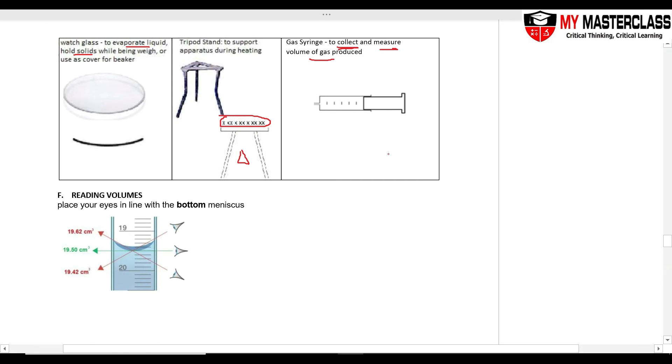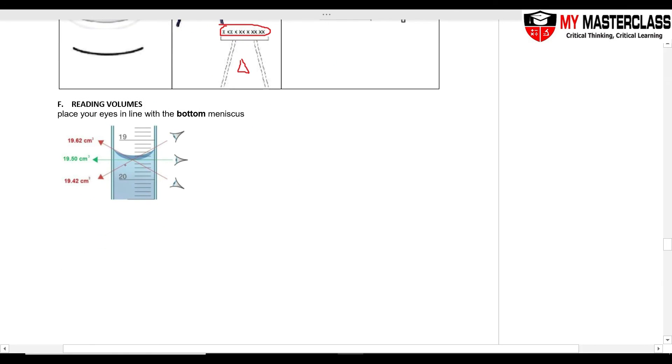Reading volumes of your liquid, always read the bottom meniscus, and then it must be in line with the bottom meniscus. If you read it from here, if you read it from here, all these are all parallax error.